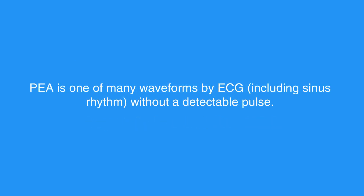PEA is one of many waveforms seen on ECG, including sinus rhythm, without a detectable pulse. PEA may include any pulseless waveform with the exception of VF, VT, or Asystole.